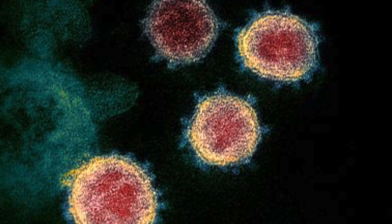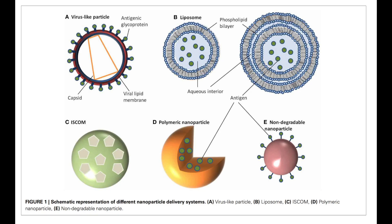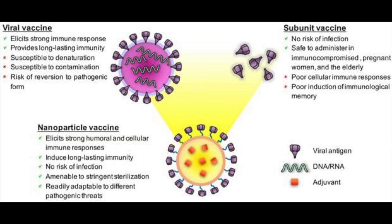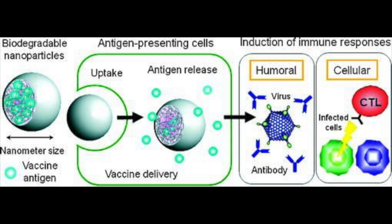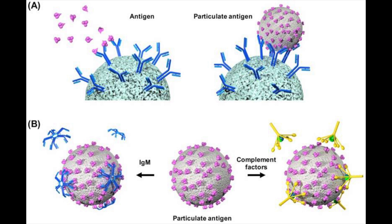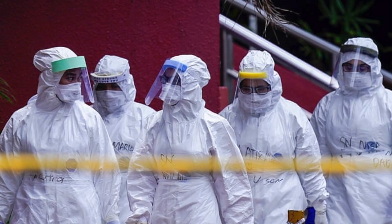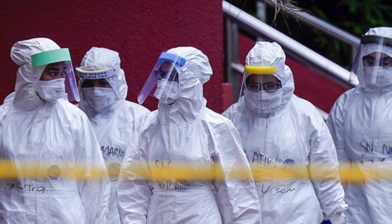nanoparticle vaccines. They use nanoscale materials such as virus-like particles, liposomes and immune-stimulating complexes as delivery vehicles for vaccine antigens. They hold many advantages over conventional vaccine methods and have no risk of infection. They can also be prepared from biodegradable materials like polysaccharides and polyamino acids. The multivalent interactions by nanoparticles promote receptor-mediated endocytosis and enhance binding of immune factors and complement. They therefore provide a novel prospect in the current scenario.